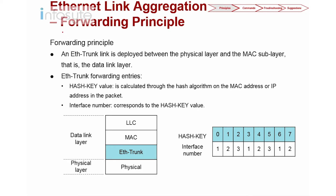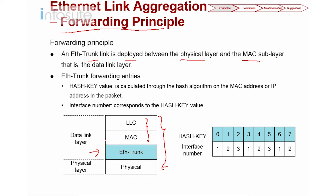Let's look into the EtherTrunk forwarding principle. EtherTrunk is deployed between the physical layer and the MAC sub-layer. At the bottom we have the physical layer, and just above it we should have the logical link control and the MAC layer. If we have configured the EtherTrunk, it is placed between the physical layer and the MAC layer — this is where the EtherTrunk resides.